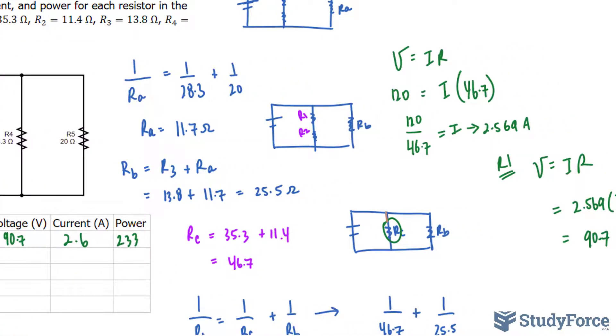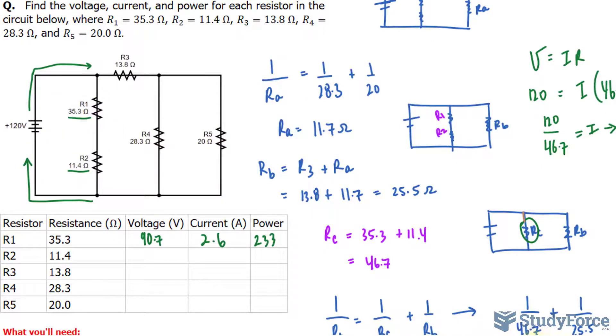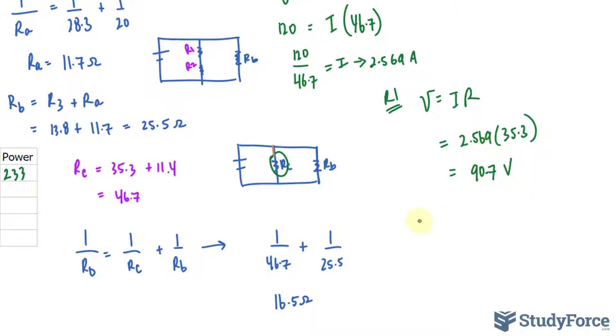Those are the values for R1. Remember R1 and R2 were in series, so the current for R2 will also be 2.569.